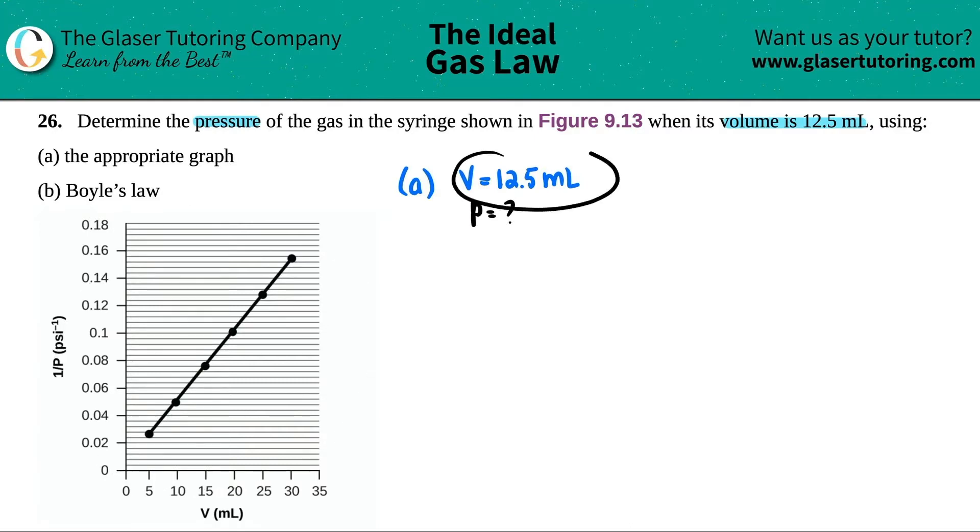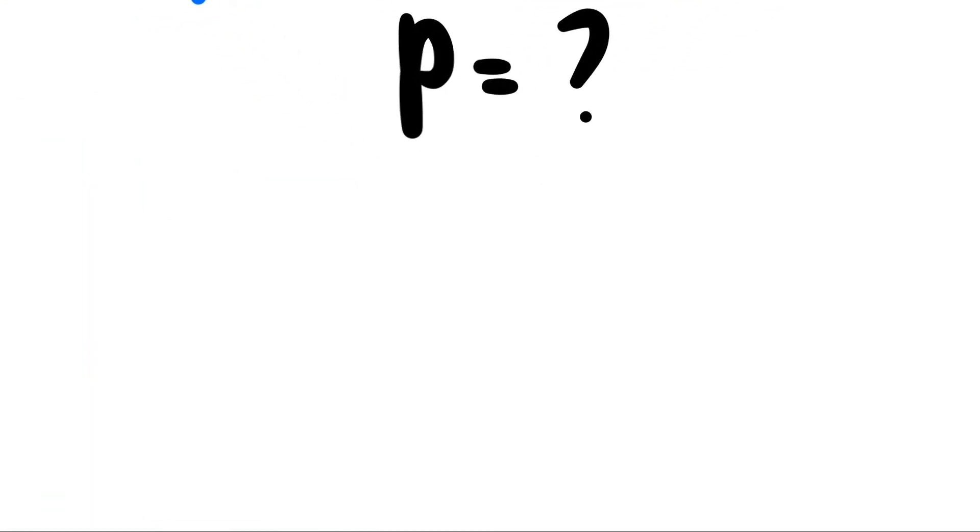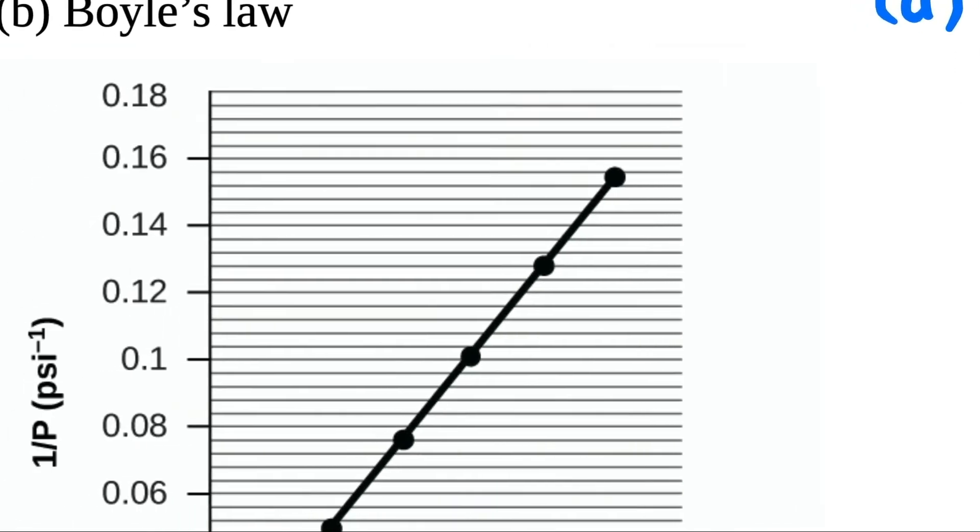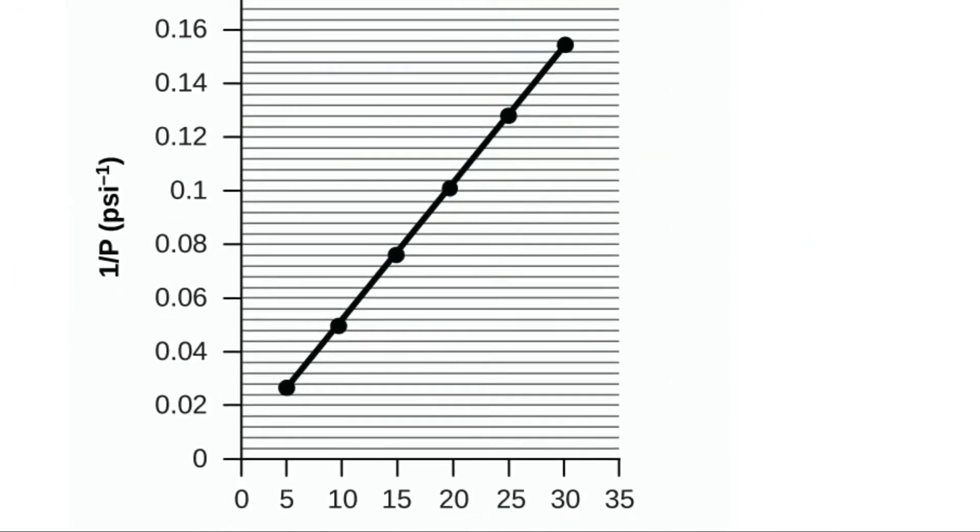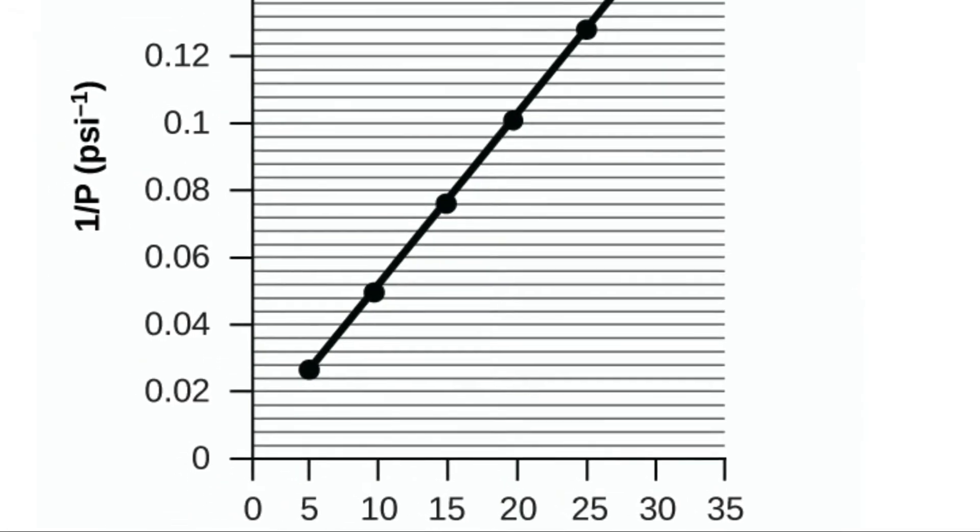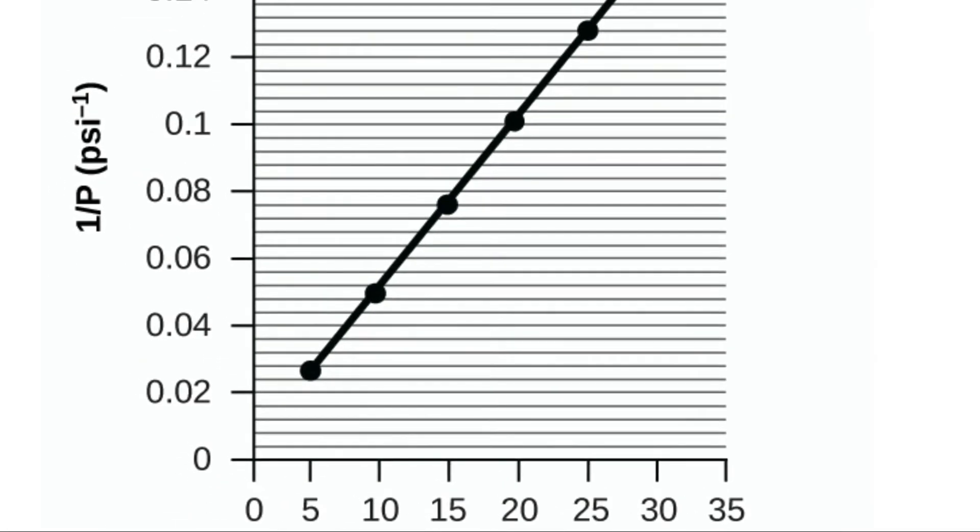Now we're going to pick out where the 12.5 is, and 12.5 is always right in the middle between 10 and 15. So what I'm going to do is I'm going to zoom in. I think I zoomed in a little bit too much. That's basically all we need. So 12.5, remember, is right in between 10 and 15. So right basically here is the 12.5.